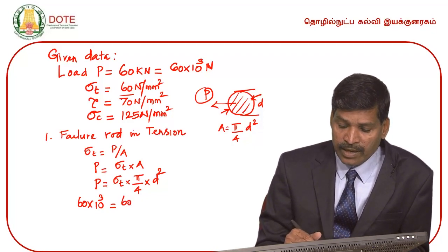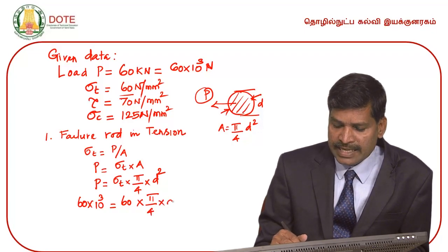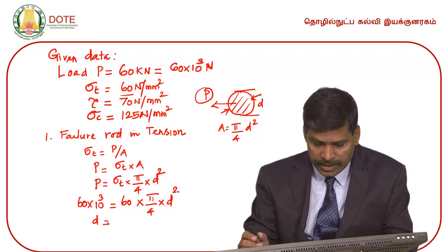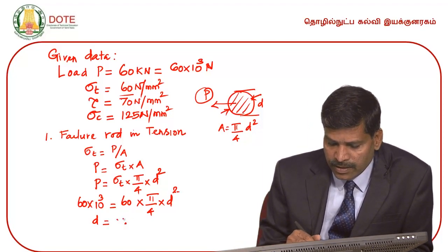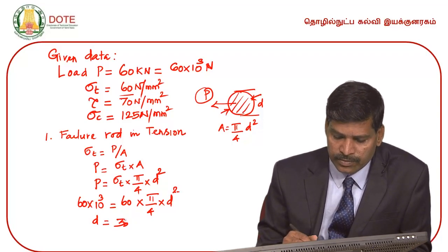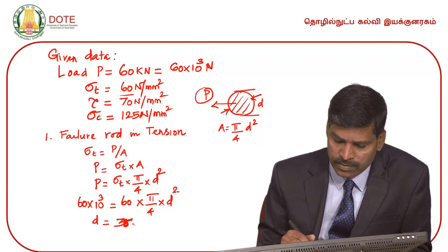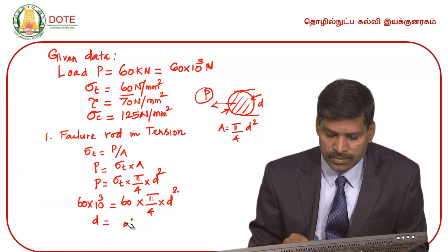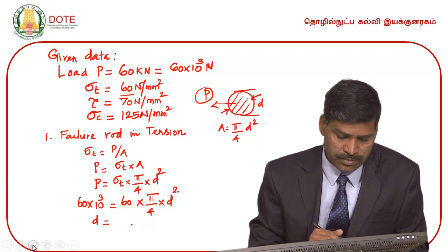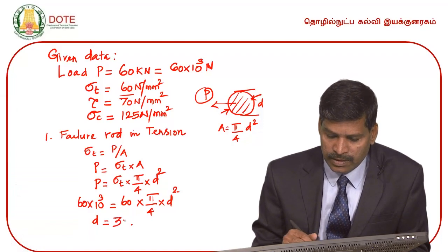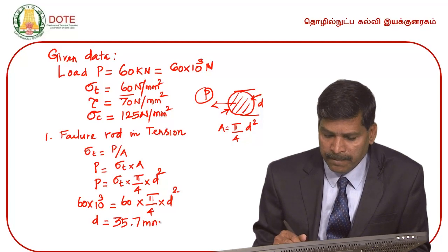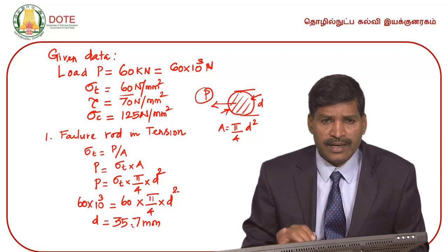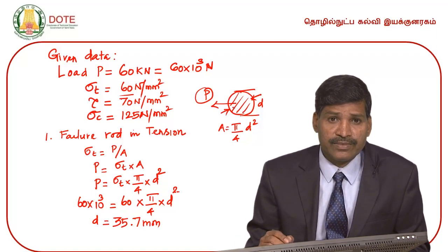Substituting the values: 60 × 10³ = 60 × π/4 × d². Solving for d, we calculate the diameter of the shaft. The fractional value is rounded off to the nearest standard diameter.